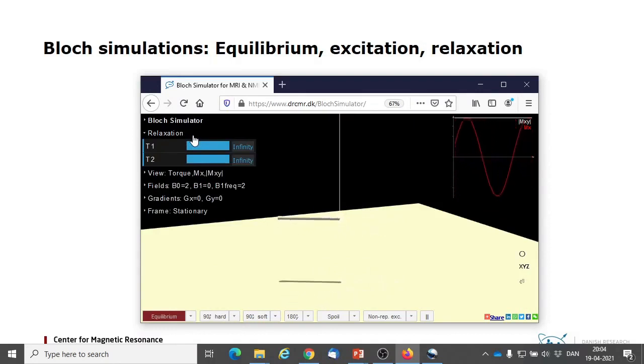Setting T2 to 6 seconds makes the transversal magnetization decay away on this timescale. Setting T1 to 8 seconds makes the longitudinal magnetization independently approach M0 on this longer timescale.